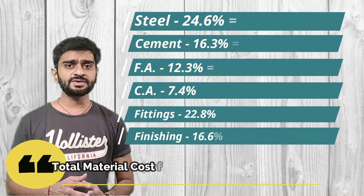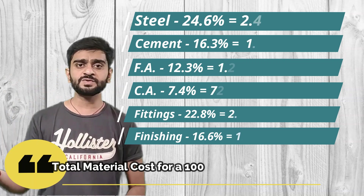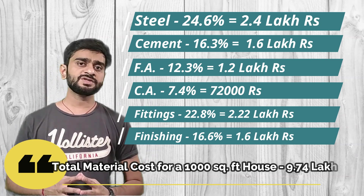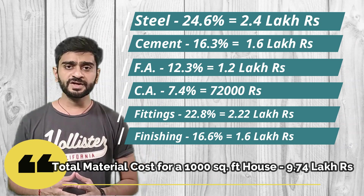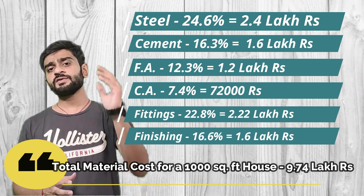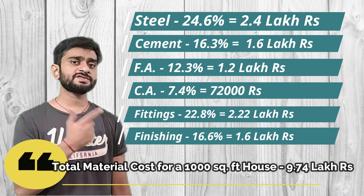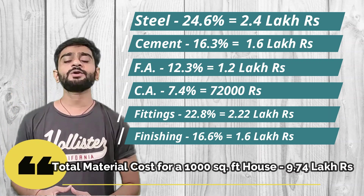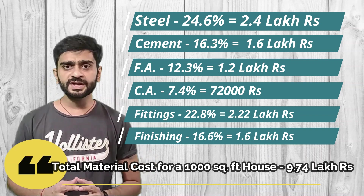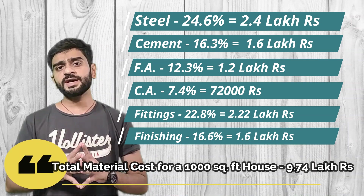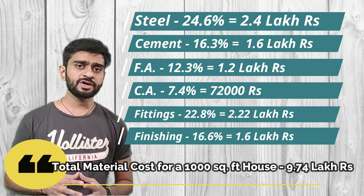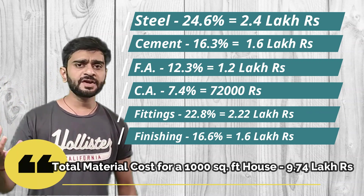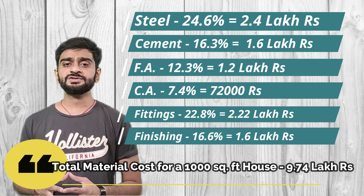Out of 9,74,000, approximately 2,40,000 will be spent on steel. On the second number we have cement with 16.3% of the overall material cost, giving a figure of 1.6 lakh for cement. For fine aggregate the figure is 12.3%, which is 1.2 lakh. Then coarse aggregate has 7.4% of the total material cost, giving 72,000 rupees. These were all the main materials for constructing the structure.